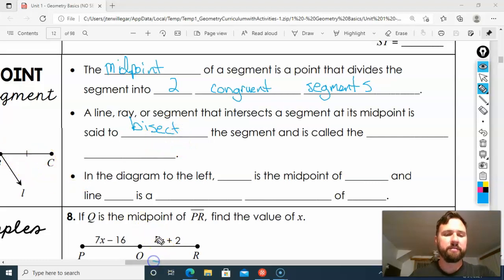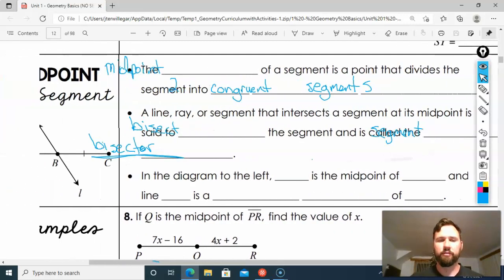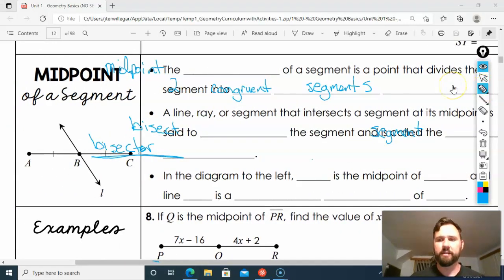For example, if you look at the picture over here—maybe can I do it like this? Good try, Mr. Williger. So that is a segment bisector if it cuts a segment in half. Alright, so if we look at this picture over here—whoa, we're getting wild here—if we look at this picture over here, we have line L, right?